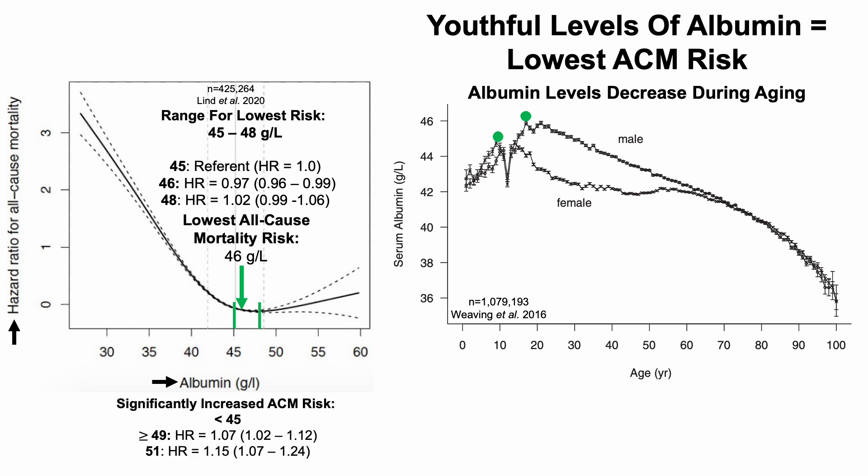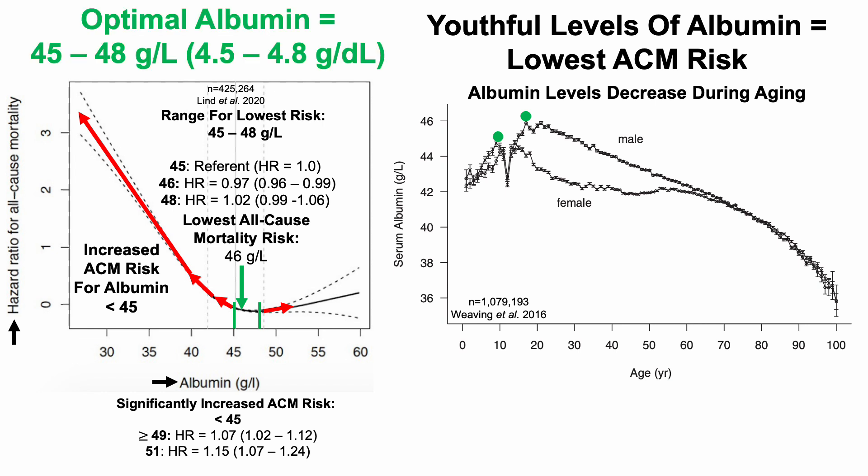Note that there is significantly increased risk when albumin is less than 45, but also when albumin is greater than 49. For 49, the hazard ratio is 1.07, a 7% increased risk for all-cause mortality, and the confidence interval does not overlap with 1. Similarly, for an albumin of 51, there is a 15% increased all-cause mortality risk. Based on the aging and all-cause mortality data, optimal albumin is 45 to 48 grams per liter, or 4.5 to 4.8 grams per deciliter.